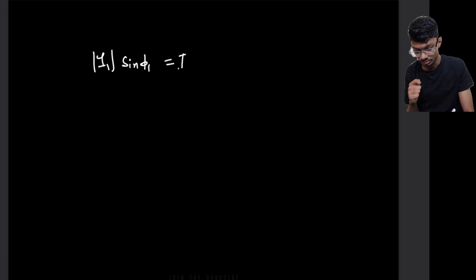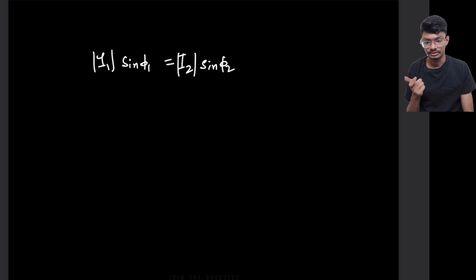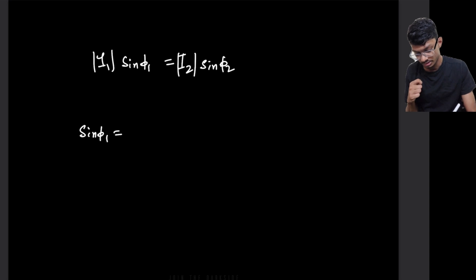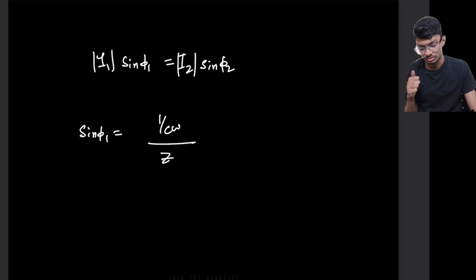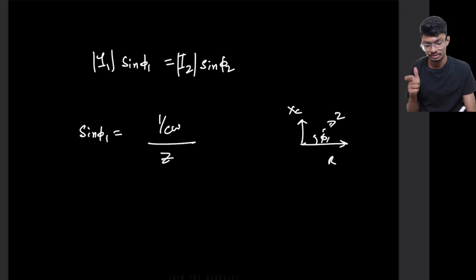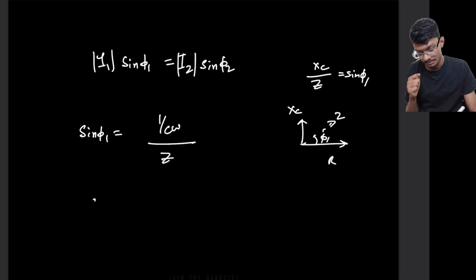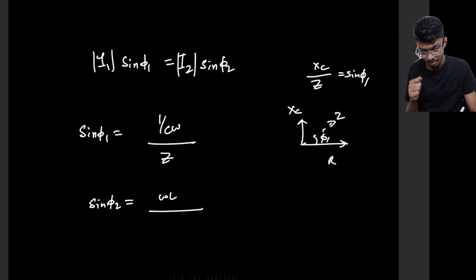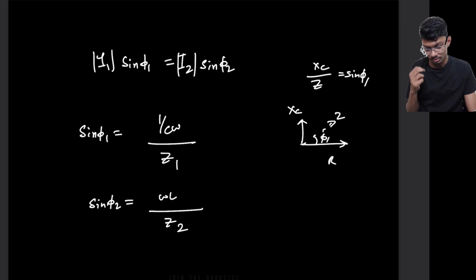From the impedance triangle, sin(phi1) = Xc / Z1 = (1/Cω) / Z1, and sin(phi2) = ωL / Z2. The magnitude |I1| = Vin / |Z1| and |I2| = Vin / |Z2|. Substituting into the condition |I1|·sin(phi1) = |I2|·sin(phi2), we get (Vin/|Z1|)·(1/Cω)/|Z1| = (Vin/|Z2|)·(ωL)/|Z2|. Vin cancels out.